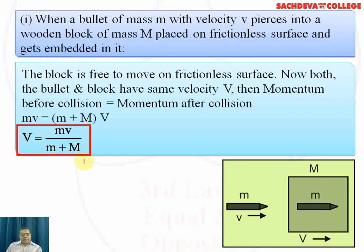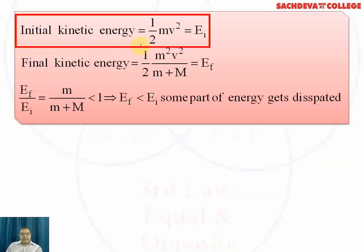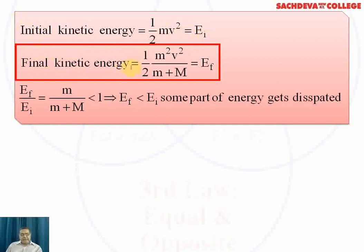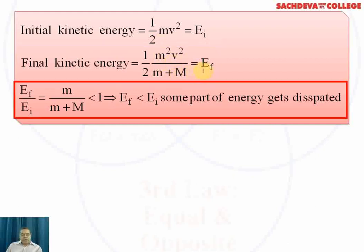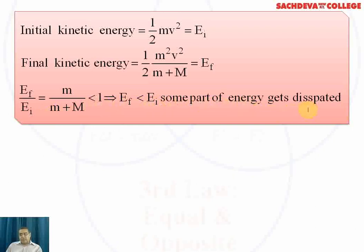The initial kinetic energy is (1/2)mv², and the final kinetic energy is (1/2)(M+m)V², which simplifies to (1/2)mv²·m/(M+m). The ratio Ef/Ei = m/(M+m), which is less than one, meaning Ef is less than Ei. Some energy is dissipated — always as heat — which does no useful work.